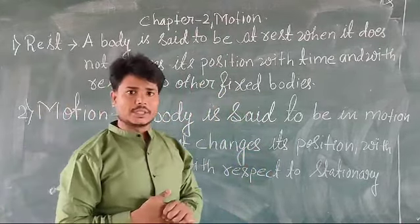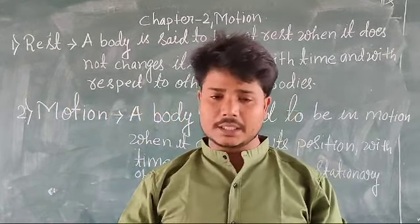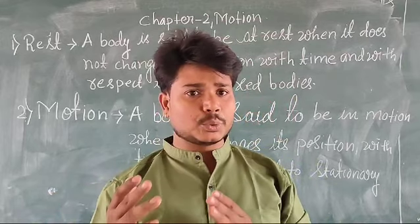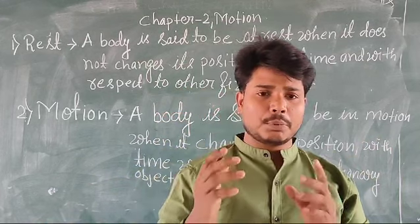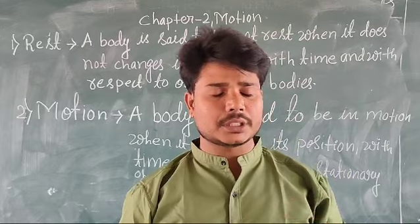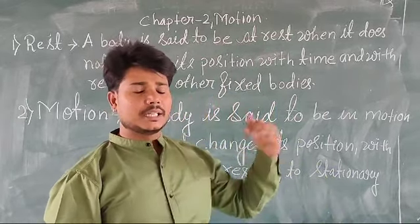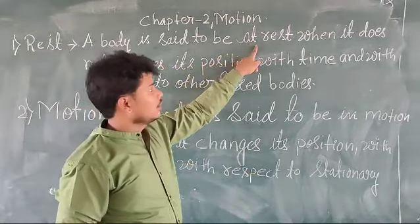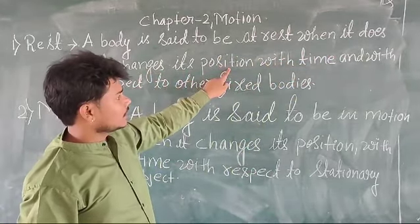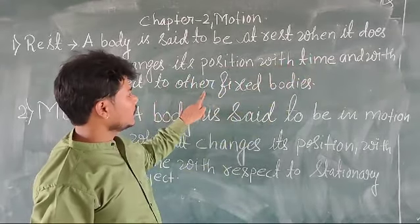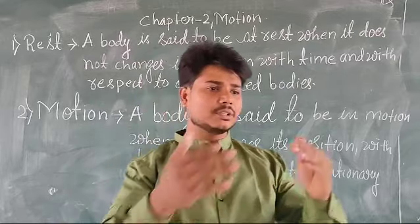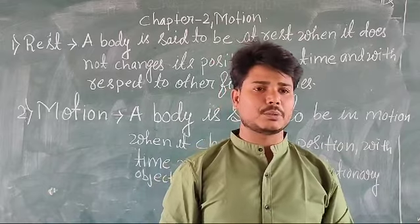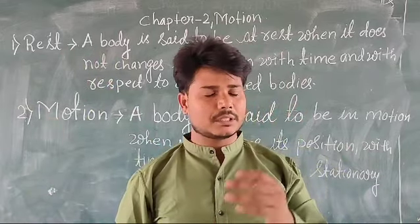The next topic is rest. What is rest? We have seen different things like a duster lying on the table, a boy sitting on a chair — their position is not changed with respect to time. A body is said to be at rest when it does not change its position with respect to time and with respect to other fixed bodies nearby. That means with respect to that body, his or her position is not changed with respect to time or with respect to some other object — that means the body is said to be at rest.